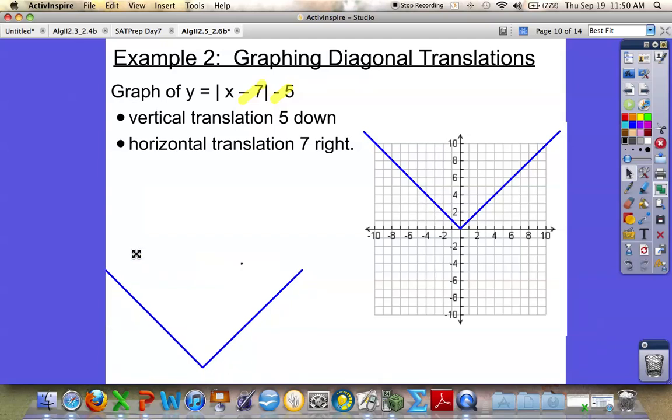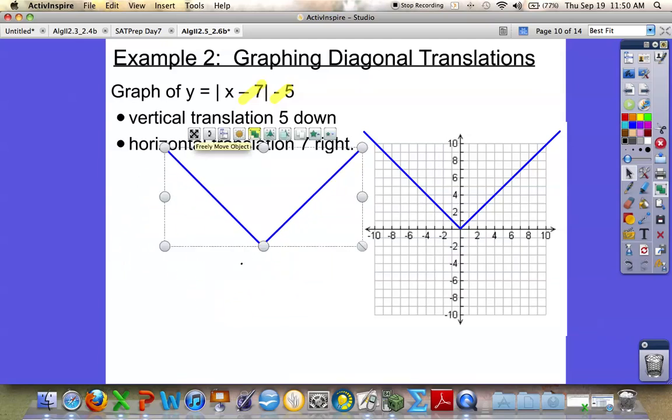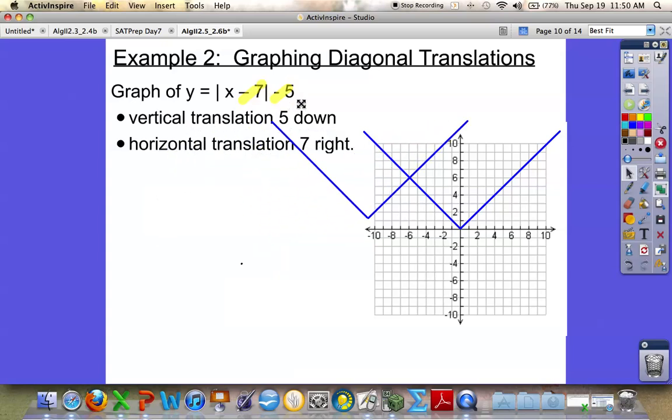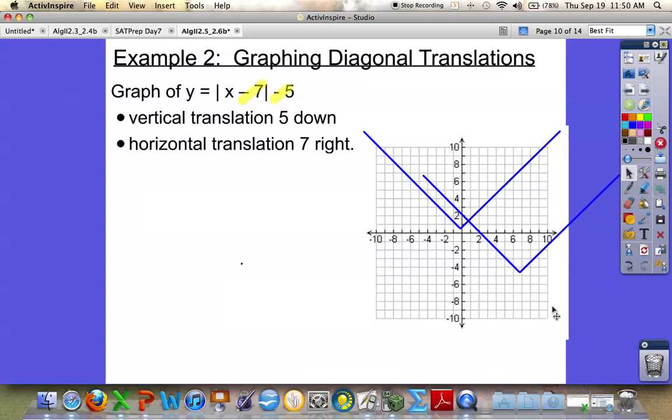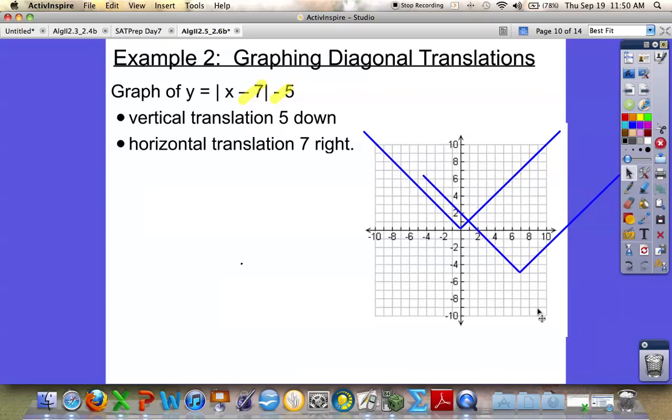And now I'm going to do this function as the shifted function. And remember, this negative 7 actually means that I'm going to go forward 7 units from the origin. So I would go 1, 2, 3, 4, 5, 6, 7. And that negative 5 outside the bars means I drop 5. 1, 2, 3, 4, 5. And that is the translated graph of the absolute value of x.